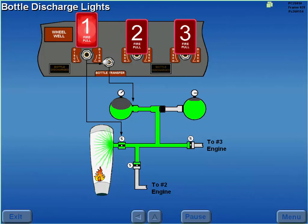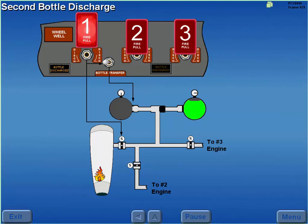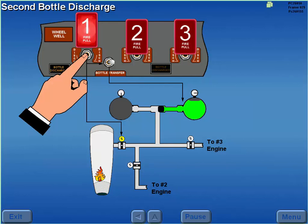After discharge, when bottle pressure becomes low, the respective bottle discharge light illuminates. If needed, the remaining fire bottle can be used by selecting the bottle and pressing the discharge button a second time.